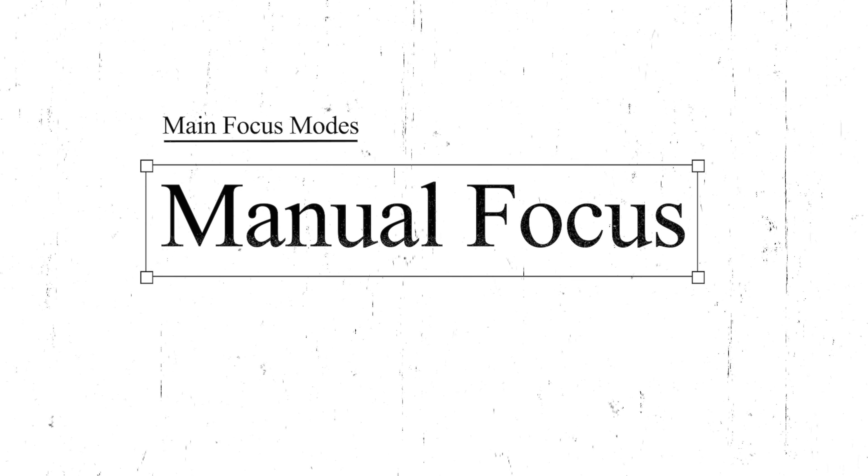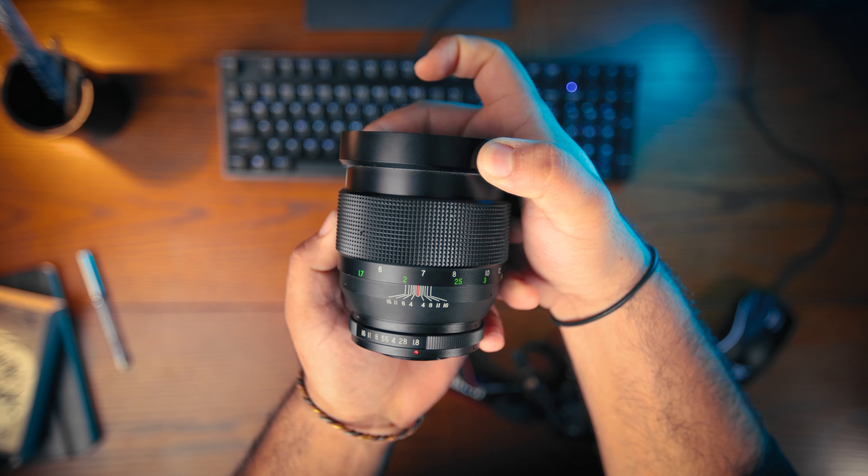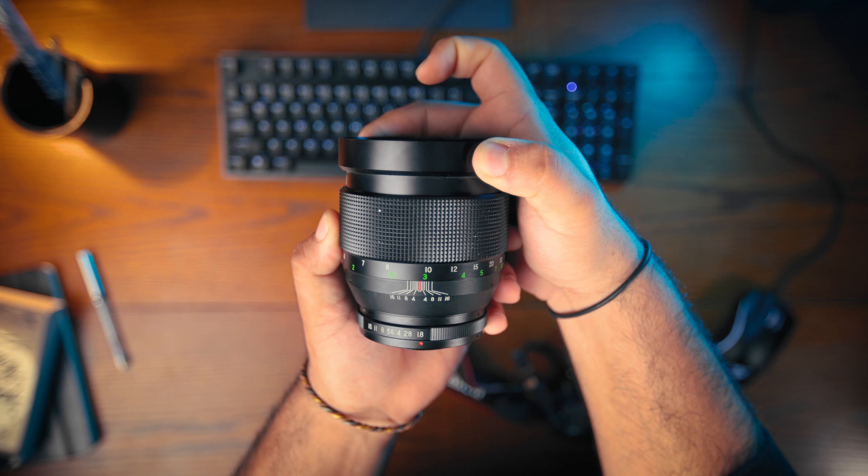The first mode is focus mode. In photography, there are two main focus modes. The first is manual focus, where you change the focus yourself by turning the focus rings. This mode is particularly good if you're using something that doesn't have good autofocus, or for certain types of photography like astrophotography, still life, or macro photography.